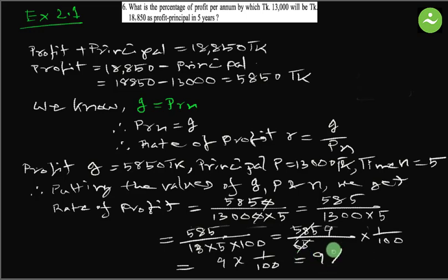9 multiply by 100 means 9 percent, so that is the answer. Thank you very much. If you have any question, please write it in the comment box. Allah Hafiz.